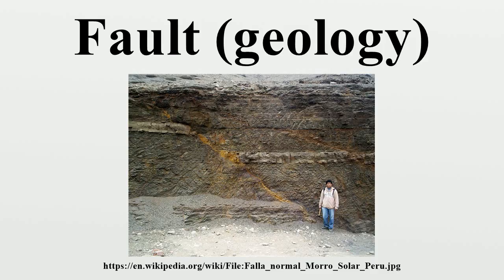All faults have a measurable thickness, made up of deformed rock characteristic of the level in the crust where the faulting happened, the rock types affected, and the presence and nature of any mineralizing fluids. Fault rocks are classified by their textures and the implied mechanism of deformation. A fault passing through different levels of the lithosphere will have many different types of fault rock along its surface, with continued dip-slip displacement tending to juxtapose fault rocks from different crustal levels with varying degrees of overprinting.